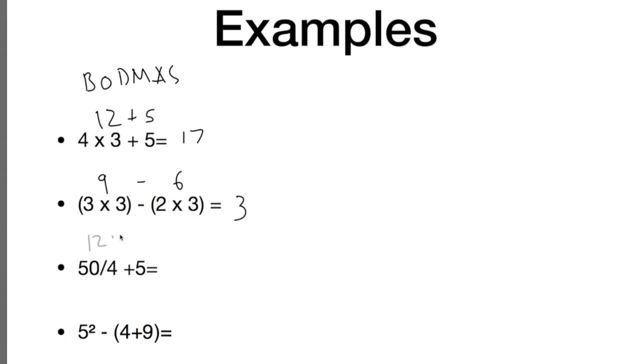And finally we have a squared number in here, so we have an order, we also have a subtraction and we also have a bracket. So the brackets must always be done first, so 4 plus 9 is 13, and then we need to do our order next, so 5 squared is 25. 25 minus 13 is 12.